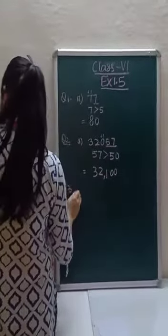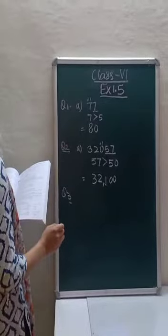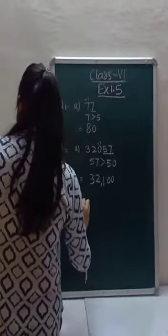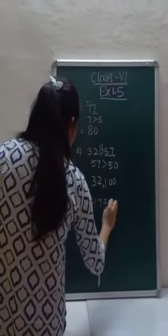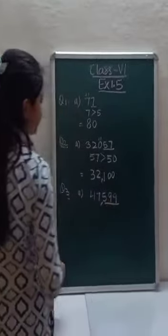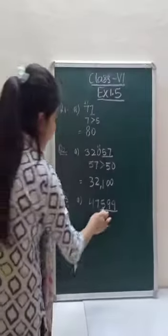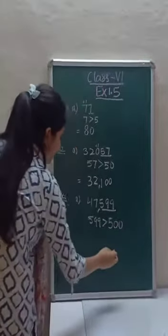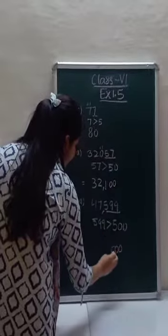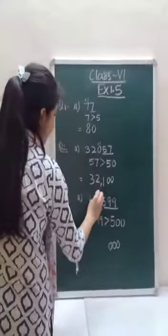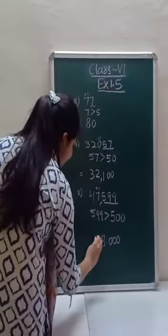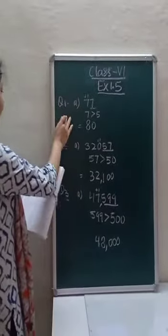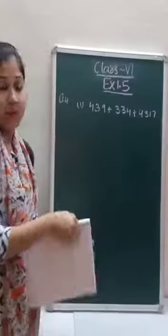Moving on to question number 3: estimate each of the following numbers to its nearest thousand. For nearest thousand, see the last three digits — 599. Since 599 is greater than 500, we put zeros in the place of ones, tens, and hundreds, and add 1 in the place of thousands. So the answer is 48,000.